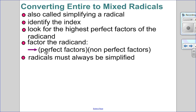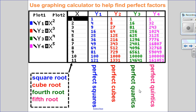To help find perfect factors on your calculator: in Y1 put x squared for perfect squares, in Y2 put x cubed for perfect cubes, x to the 4th for perfect quartics, x to the 5th for perfect quintics, and so on. The x values in the table are the roots — so for the blue numbers, x is the square root; for red, x is the cube root; for green, x is the fourth root; and for pink, x is the fifth root. This can help you when you're trying to find the factors.